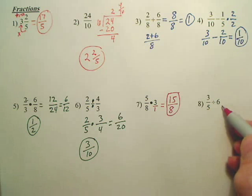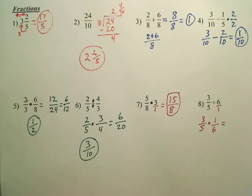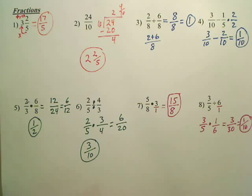Okay, 3 fifths divided by 6. Well isn't 6, 6 over 1? So could I now rewrite this as 3 fifths times what? I could flip the 6 and make it 1 over 6. Pretty simple. Multiply straight across, we got 3. Multiply straight across, we have 30. 3 going to both of those? 1 time and 10 times. Perfect. Beautiful.